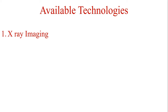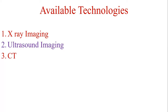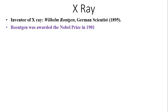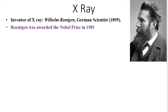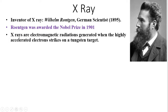There are different modalities available, classified as X-ray imaging, ultrasound imaging, CT, MRI, PET, SPECT, etc. We'll see each one in detail. First, let's look at X-rays. The inventor of X-rays was Wilhelm Röntgen, a German scientist, and the discovery was in 1895. Röntgen was awarded the Nobel Prize in 1901. X-rays are electromagnetic radiations belonging to invisible radiations, generated when a highly accelerated electron strikes on a tungsten target.